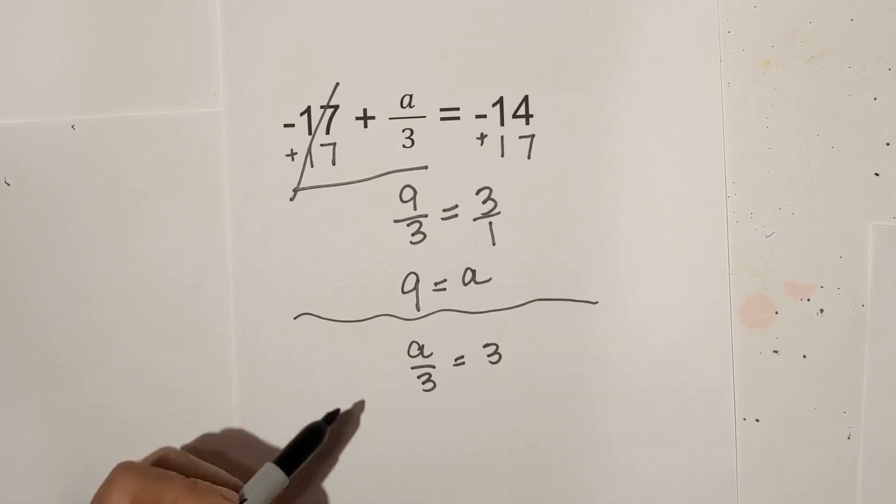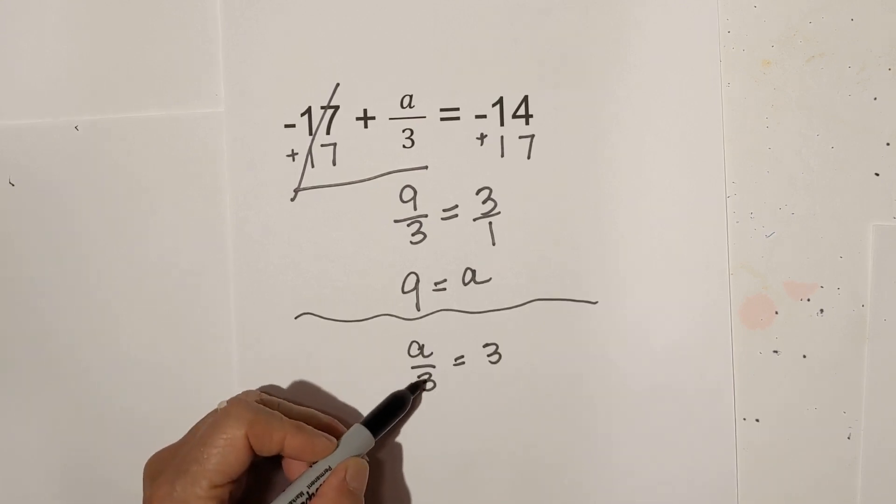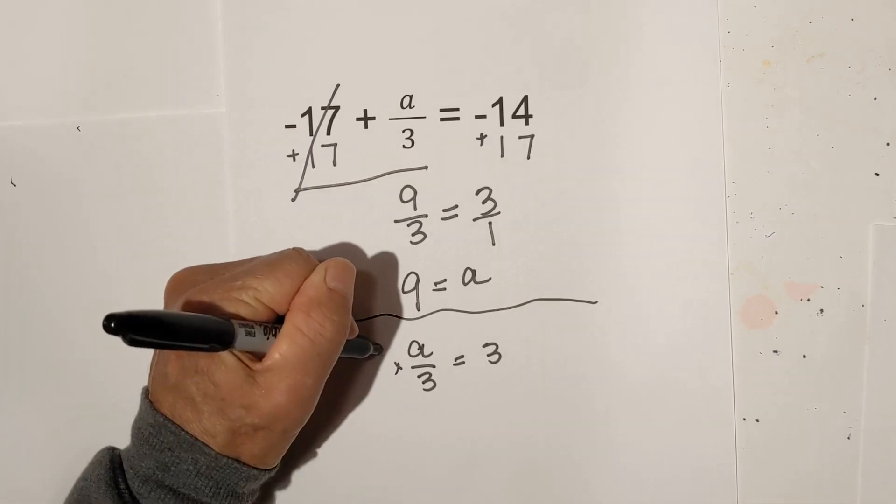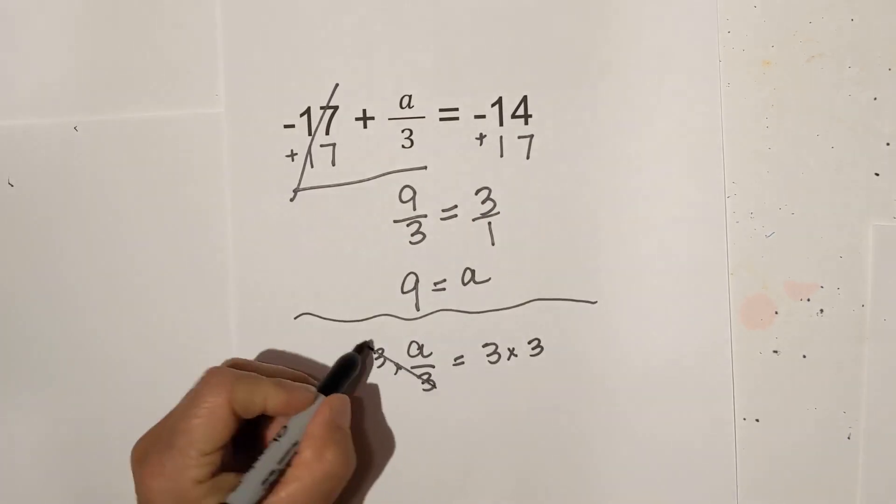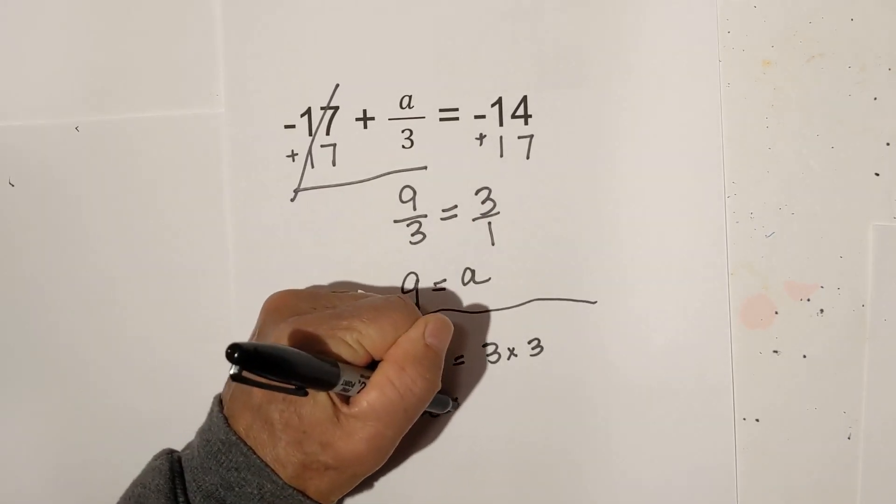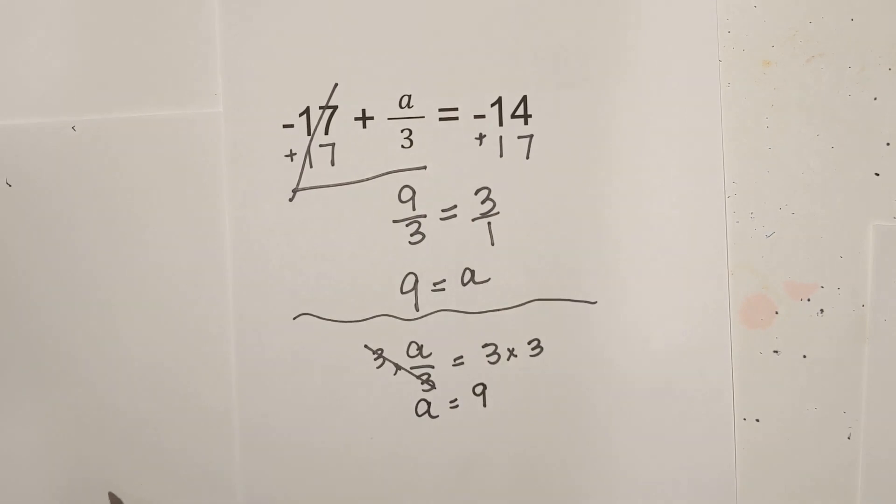Now, if you don't like the shortcut of cross multiplying, then what you would do, remember this is division. So you multiply this side by 3 and this side by 3. These cancel. Bring down the A is equal to 9. There we go.